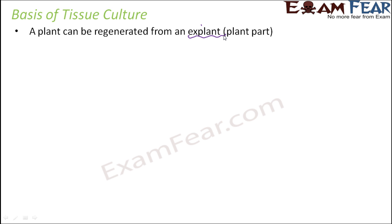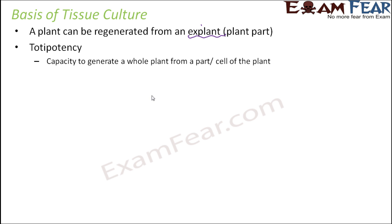The explant can grow into the complete plant. So the basis of tissue culture is that one complete plant can be grown from the explant. This capacity to generate a whole plant from a part or a cell of the plant is known as totipotency — this capability of a cell to grow and form the complete original plant is known as totipotency.